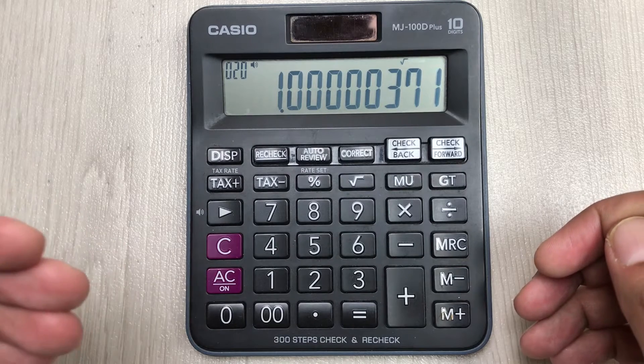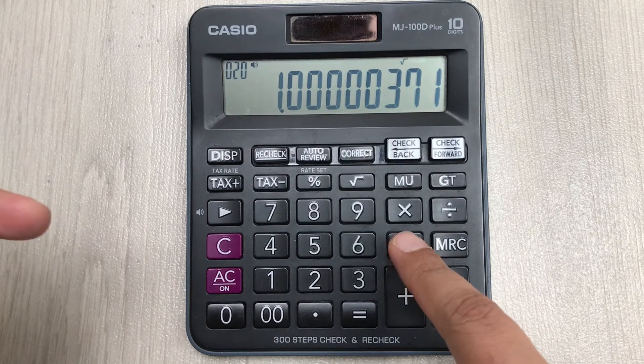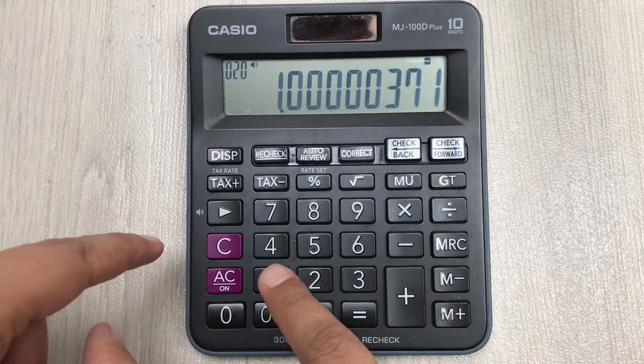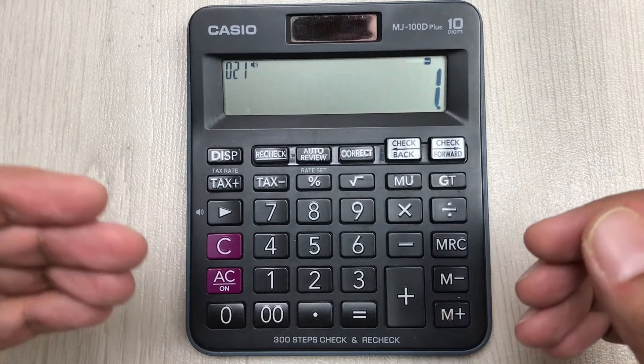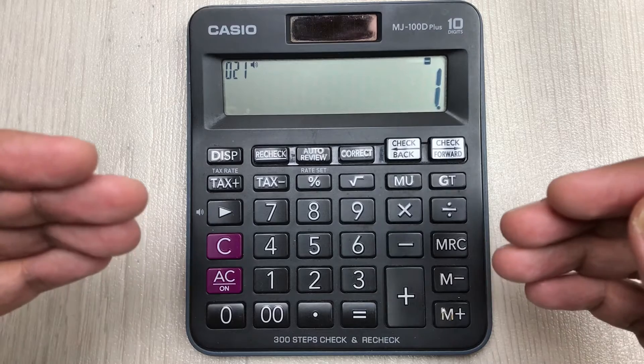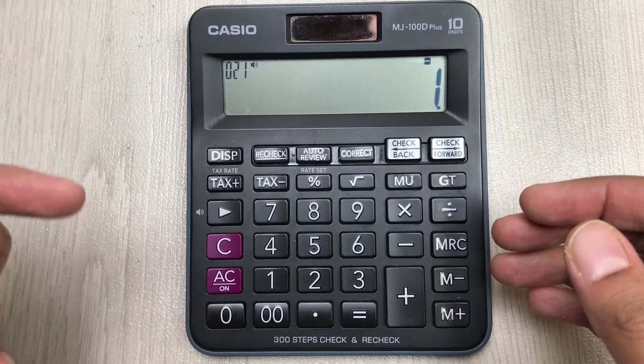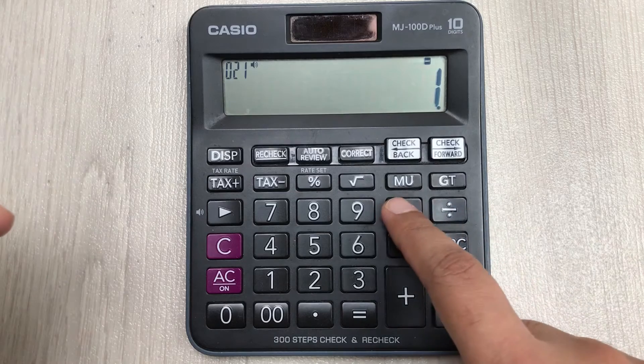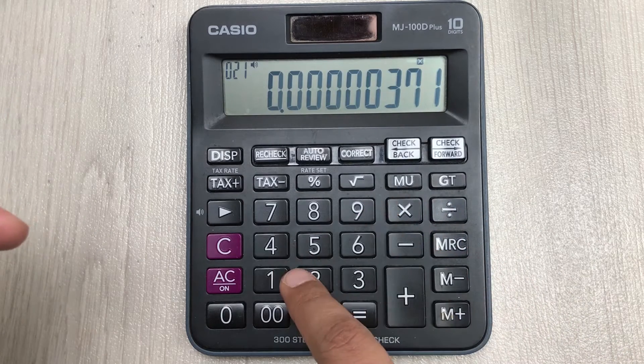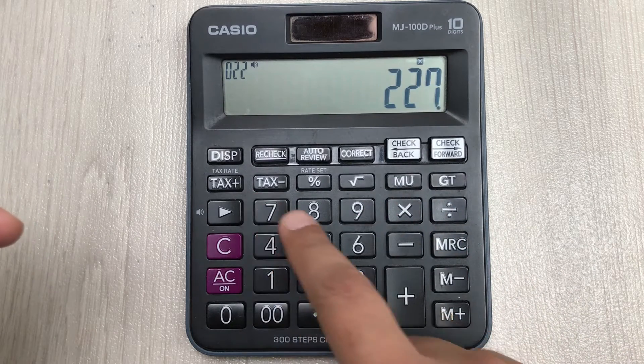So I press minus one. And in the last step you have to multiply it with 227695. So I will multiply it with 227695.